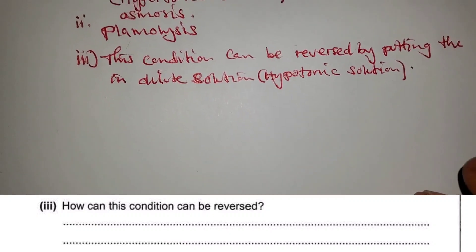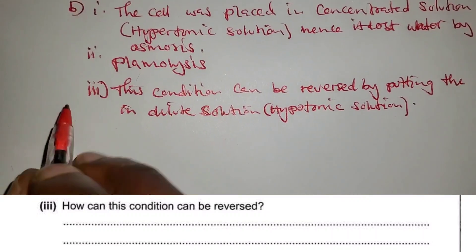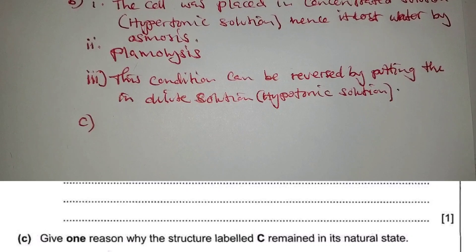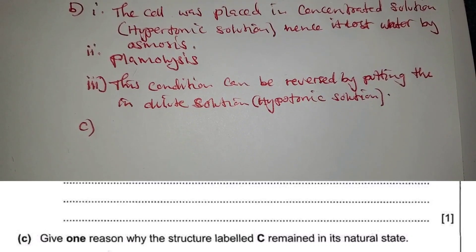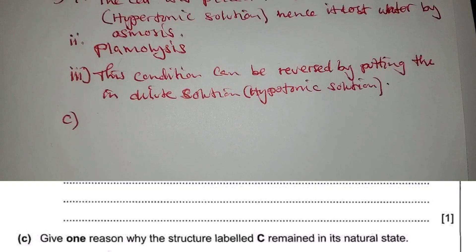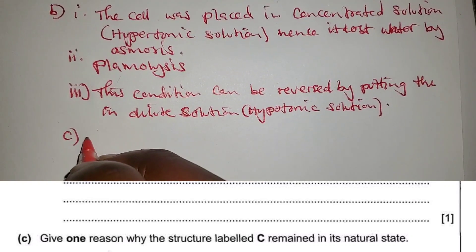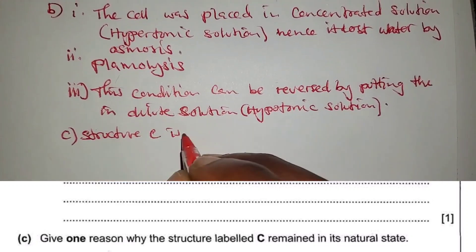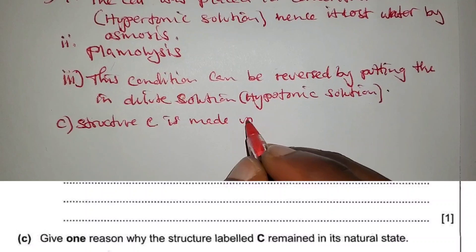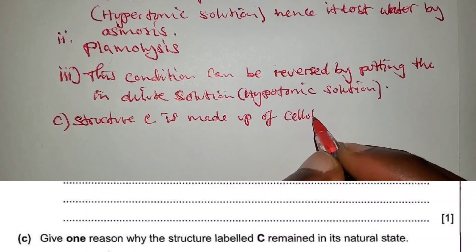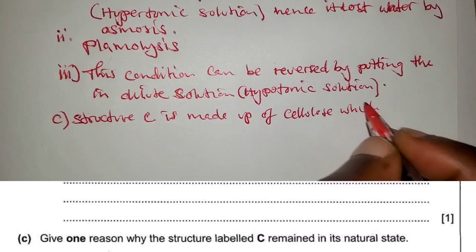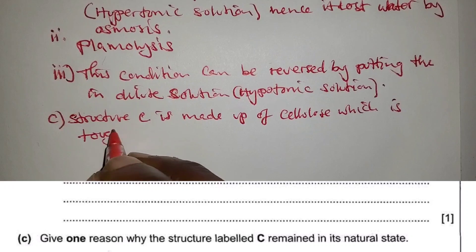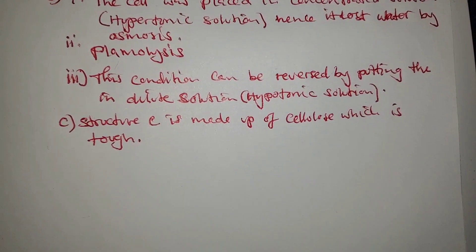Next question, which is question C, asks to give one reason why the structure labeled C remained in its natural state. You can say the structure C is made up of cellulose, which is rigid or which is tough.